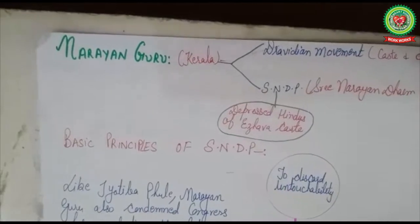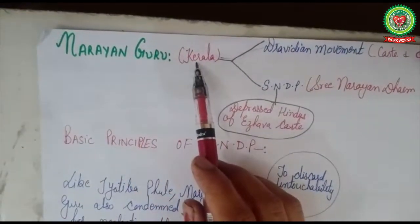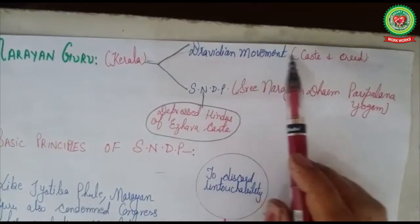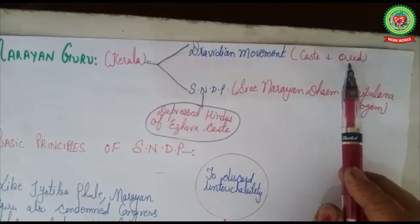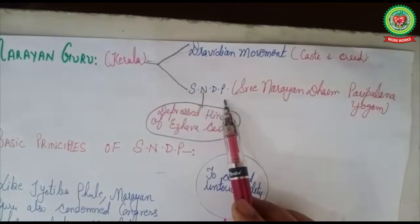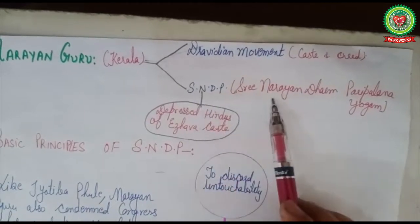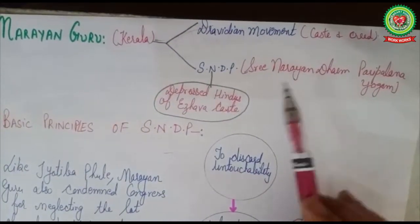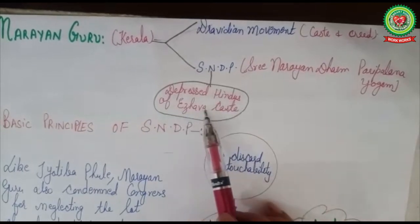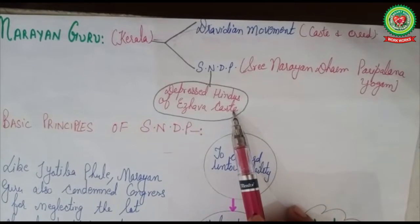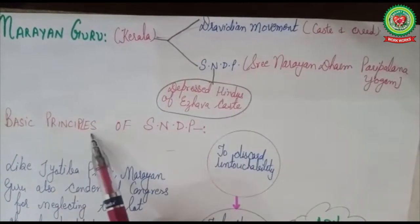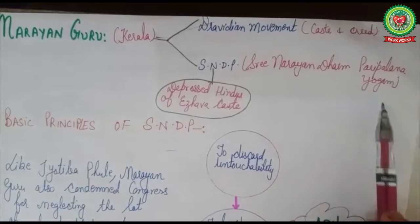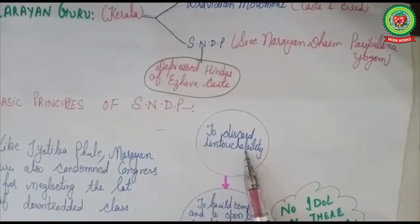Now we will discuss the contribution of Sri Narayan Guru. He started a reform movement in Kerala, where there was already a Dravidian movement working against caste and creed. Sri Narayan Guru started another movement called SNDP — Sri Narayan Dharma Paripalna Yogam — specially for the depressed Hindu people of the Izava caste, to which Sri Narayan Guru also belonged.